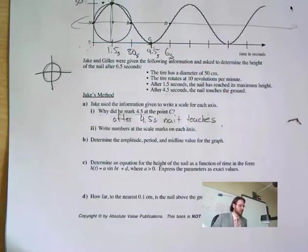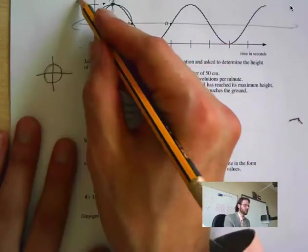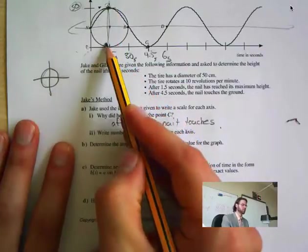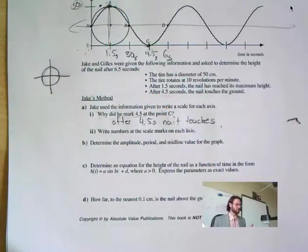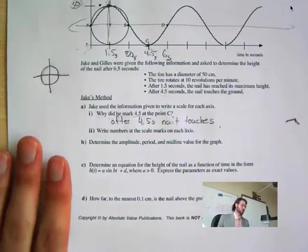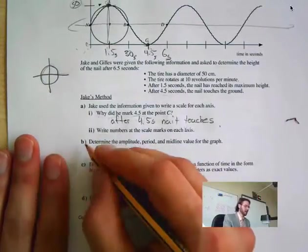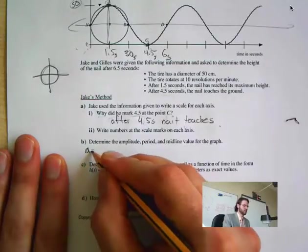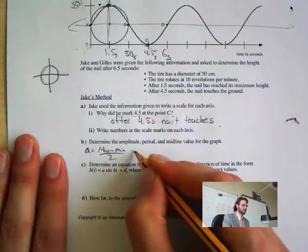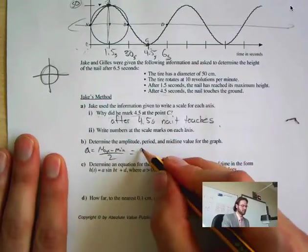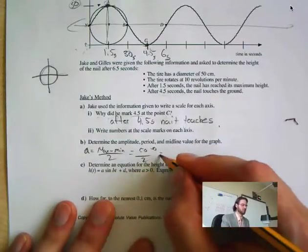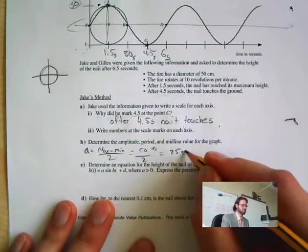Now let's mark the scale of each axis. This here is going to have to be 50 because that's the diameter. The diameter is 50, so from top to bottom of the tire is 50 centimeters. Now it says determine the amplitude, period, and midline of the graph.